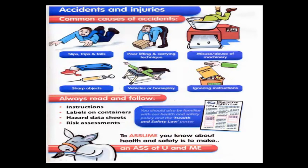Common causes of accidents: slips, trips and falls, and poor manual handling — between those two, they account for the biggest majority of accidents in the workplace. Next we have misuse and abuse of machinery, working with sharp objects, vehicles, horseplay, and ignoring instructions. Always read and follow instructions, labels on containers, hazard data sheets — which are documents that come with industrial chemicals telling you what's in the chemical and what to do in an emergency — and always read and follow your risk assessments.